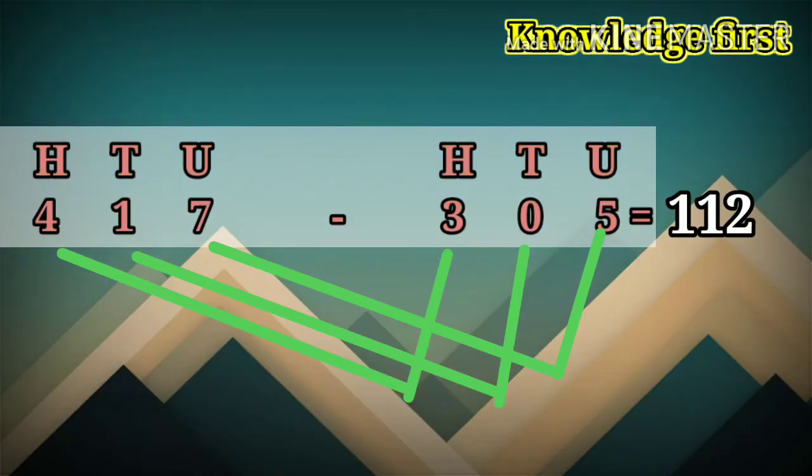Next example, 417 minus 305. Subtract unit from unit, tens from tens, and hundreds from hundreds. 7 minus 5 is equal to 2, 1 minus 0 is equal to 1, and 4 minus 3 is equal to 1. Answer is 112.